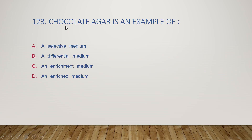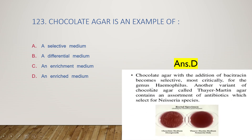Next question: chocolate agar is an example of a selective medium, differential medium, enrichment medium, or enriched medium? The right answer is option D, an enriched medium. In an enriched medium, specific nutrients are added to enrich the media composition. Chocolate agar with the addition of bacitracin becomes selective for the genus Haemophilus, and another variant called Thayer-Martin agar contains antibiotics that select for Neisseria species.